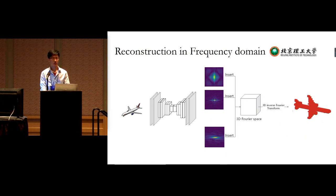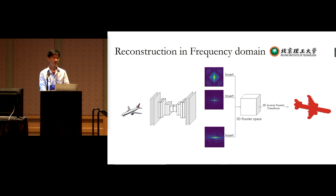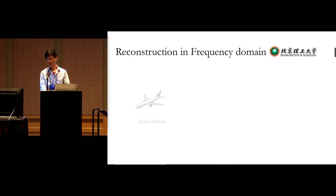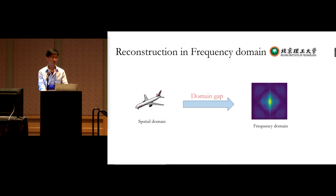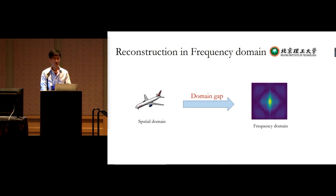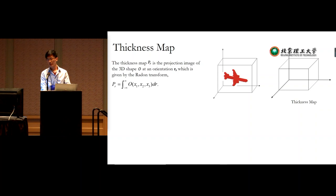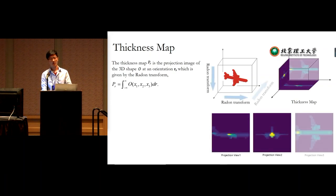We first predict slices from a single image using a deep neural network, embed slices into 3D space, and apply an inverse Fourier transform to get the final 3D shape. However, due to the information gap between spatial and frequency domains, it is difficult to learn a projection function from an image to a frequency slice directly. To address this, we introduce an intermediate representation: the thickness map.